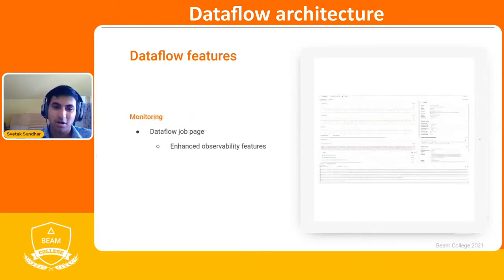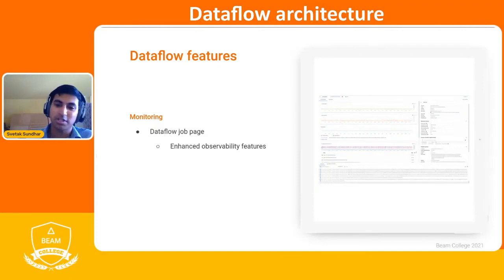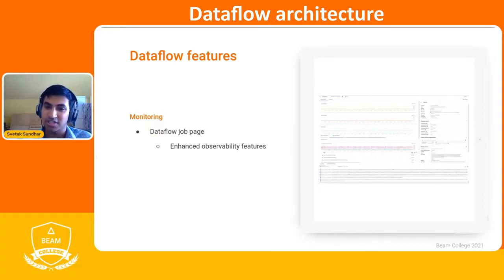The next thing Cloud Dataflow has to offer is the actual UI itself. You can navigate to this via the Pantheon UI and click on a Dataflow job ID representing one of your Beam pipelines running. The first thing you'll see is the steps of your Beam pipeline — your source all the way to your sink and everything in between. You can also see job metrics such as CPU utilization and memory usage, and on the right pane, key metrics about your steps, such as wall time or throughput.